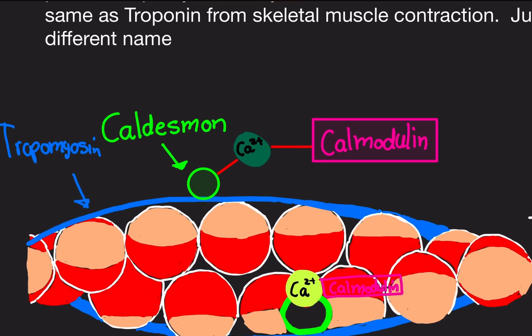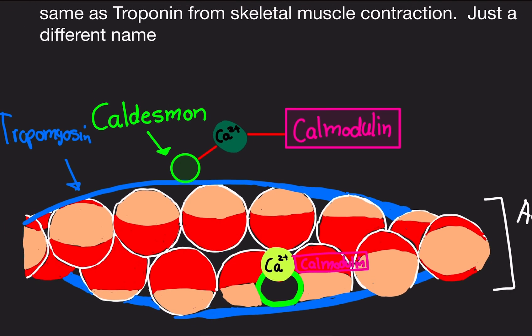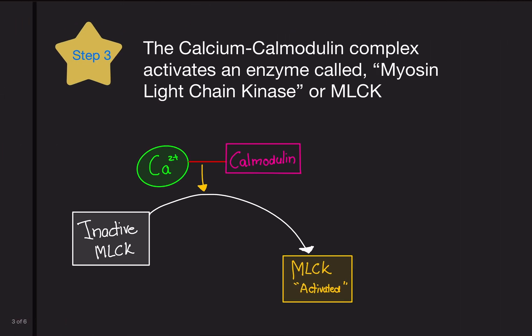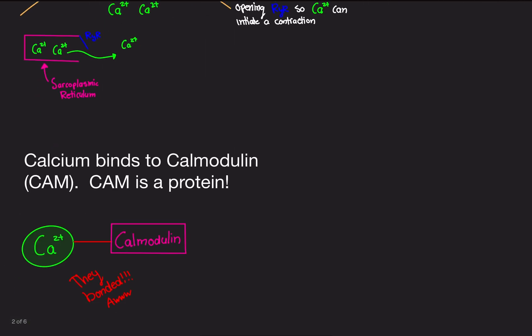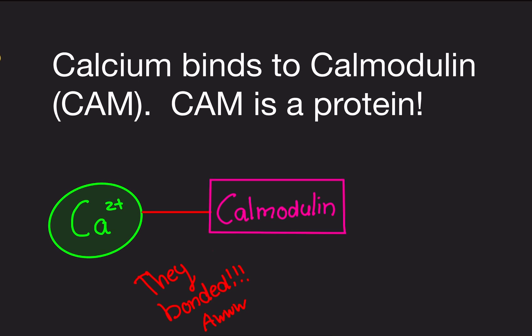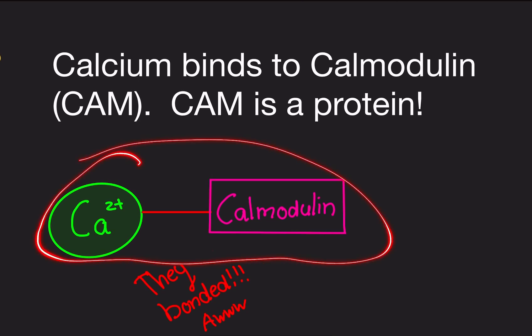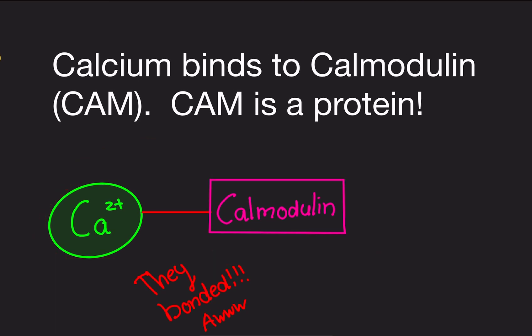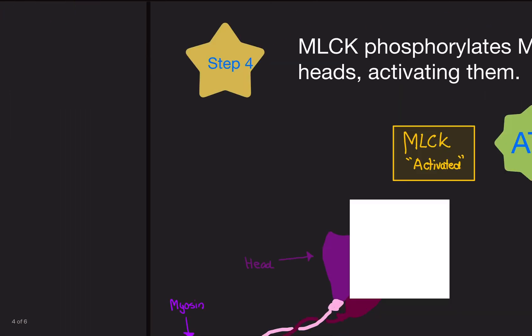Here's where it gets a little more complicated. Remember the calcium-calmodulin complex we made back in step two? We're not going to forget about it — it's still useful even after activating MLCK. It can actually still do additional things, which will be really important.